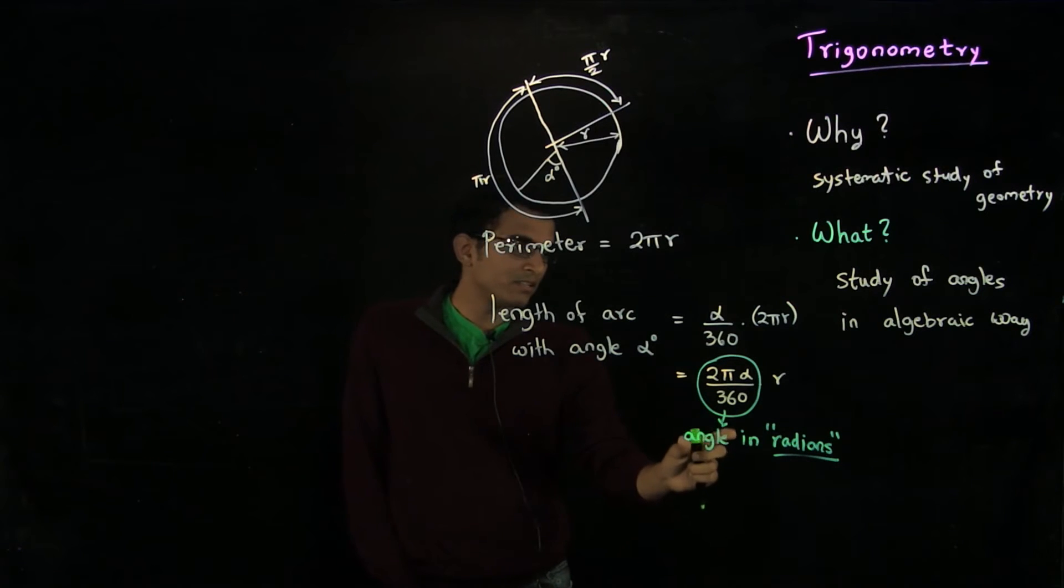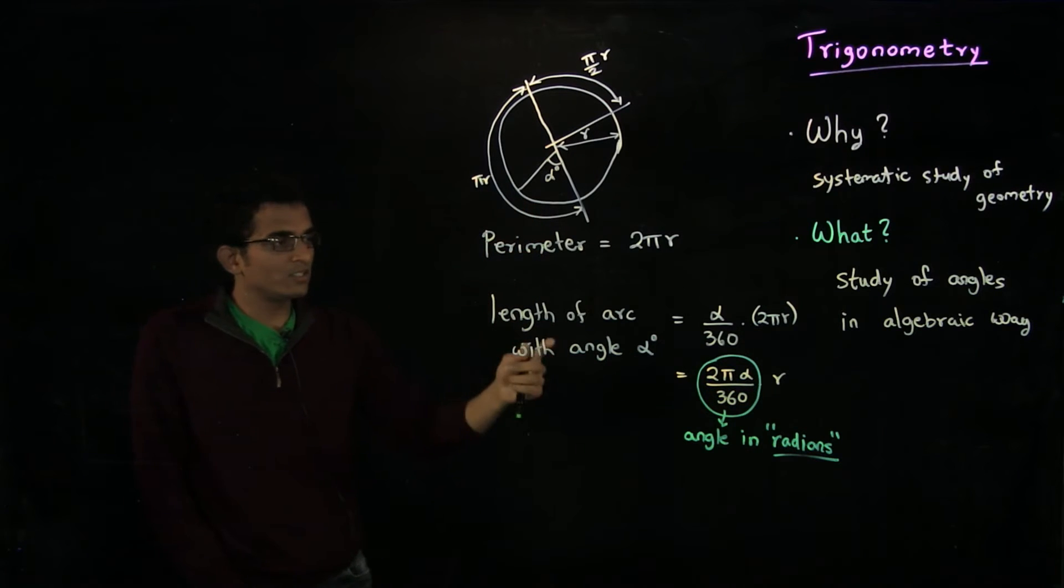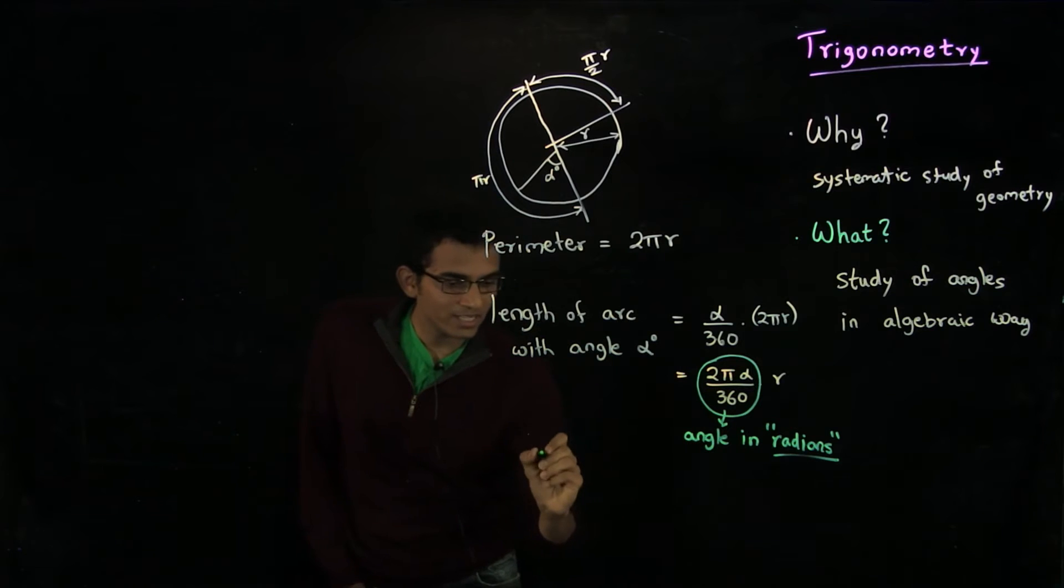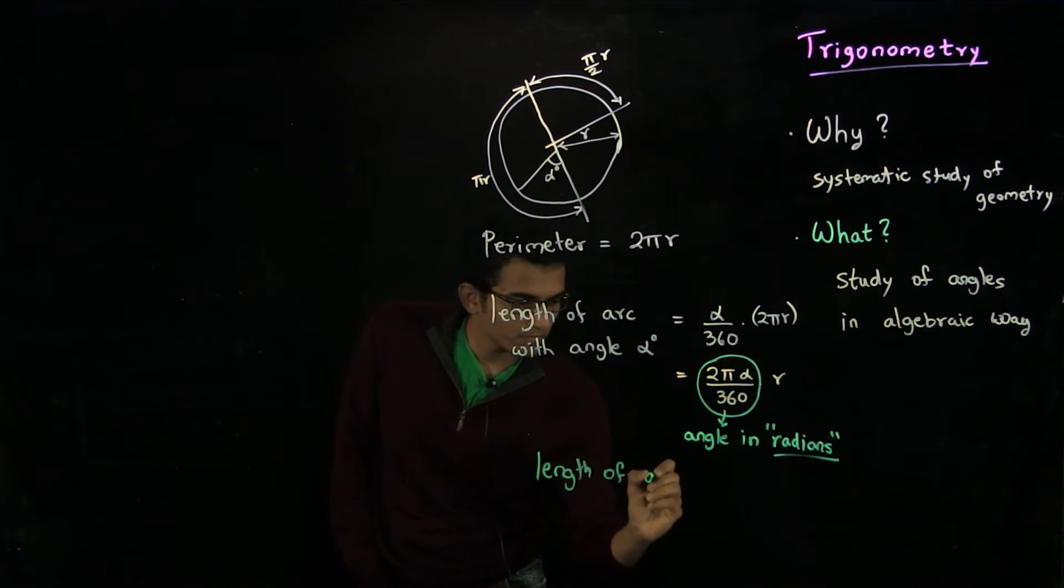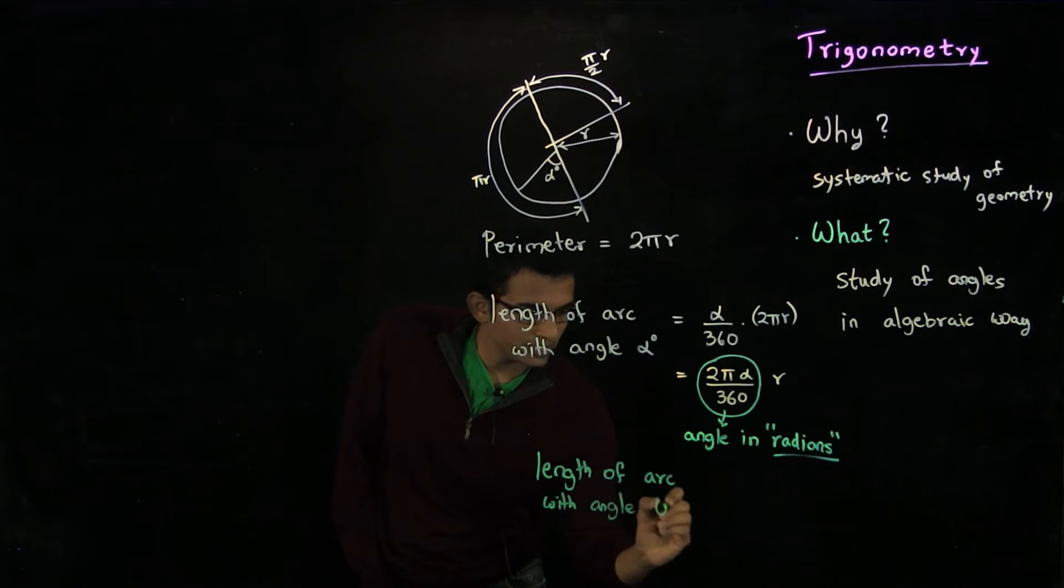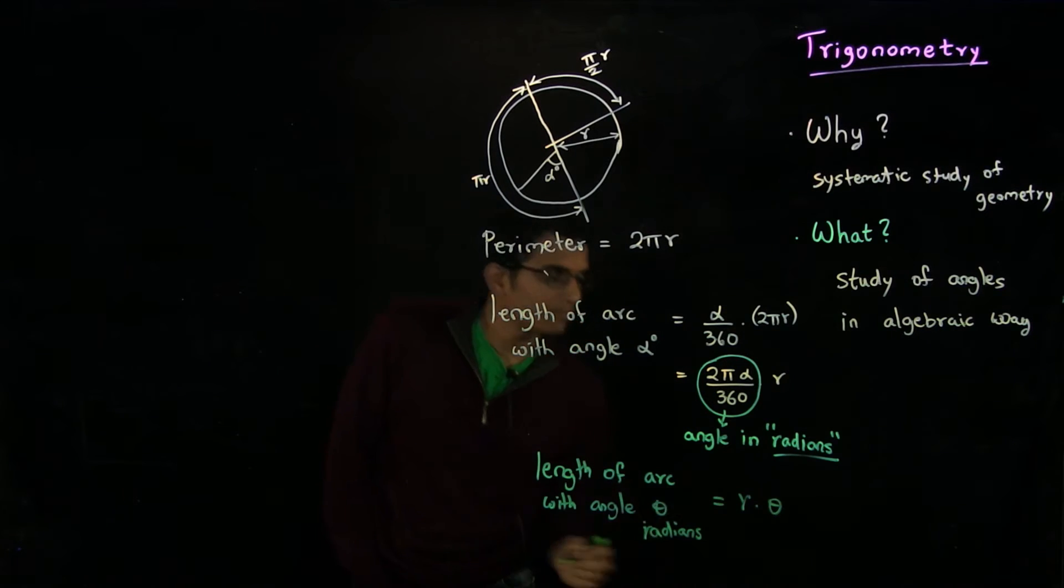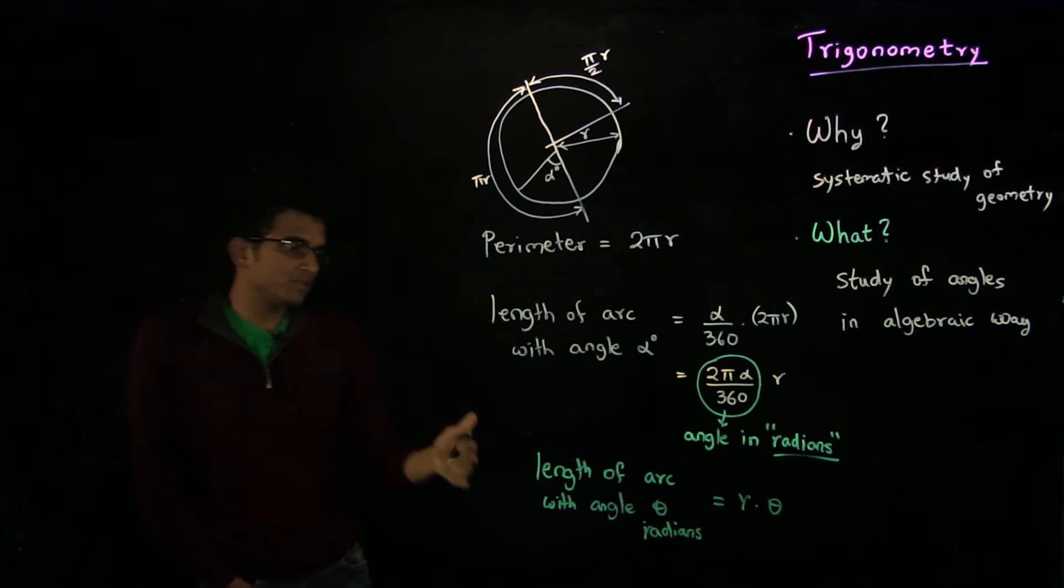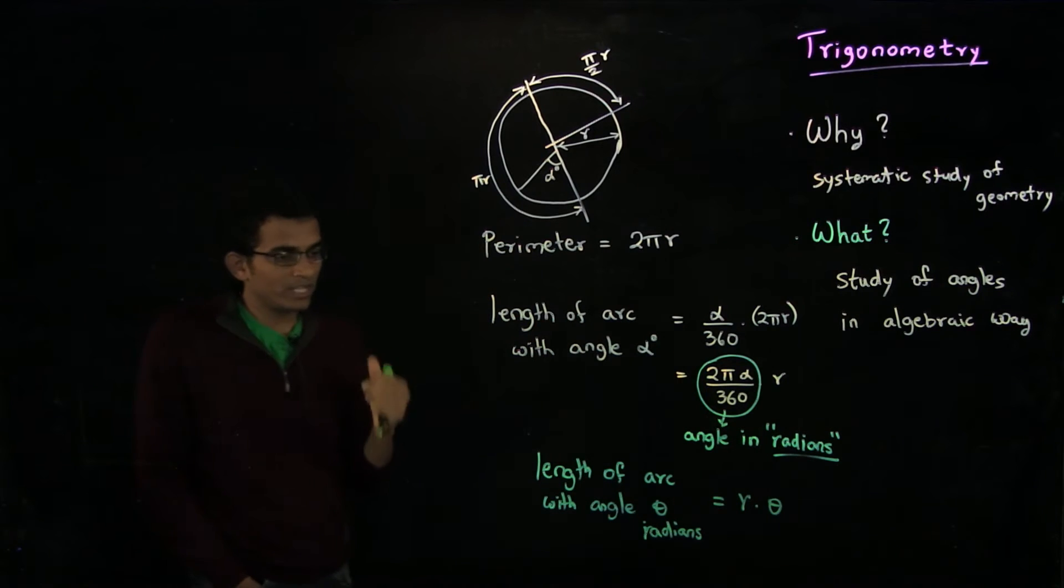Similarly here, thinking in terms of radians is often the better thing to do, because now I can write length of arc with angle theta in radians as just r times theta. That is why thinking in terms of radians is often the more natural way to think about angles.